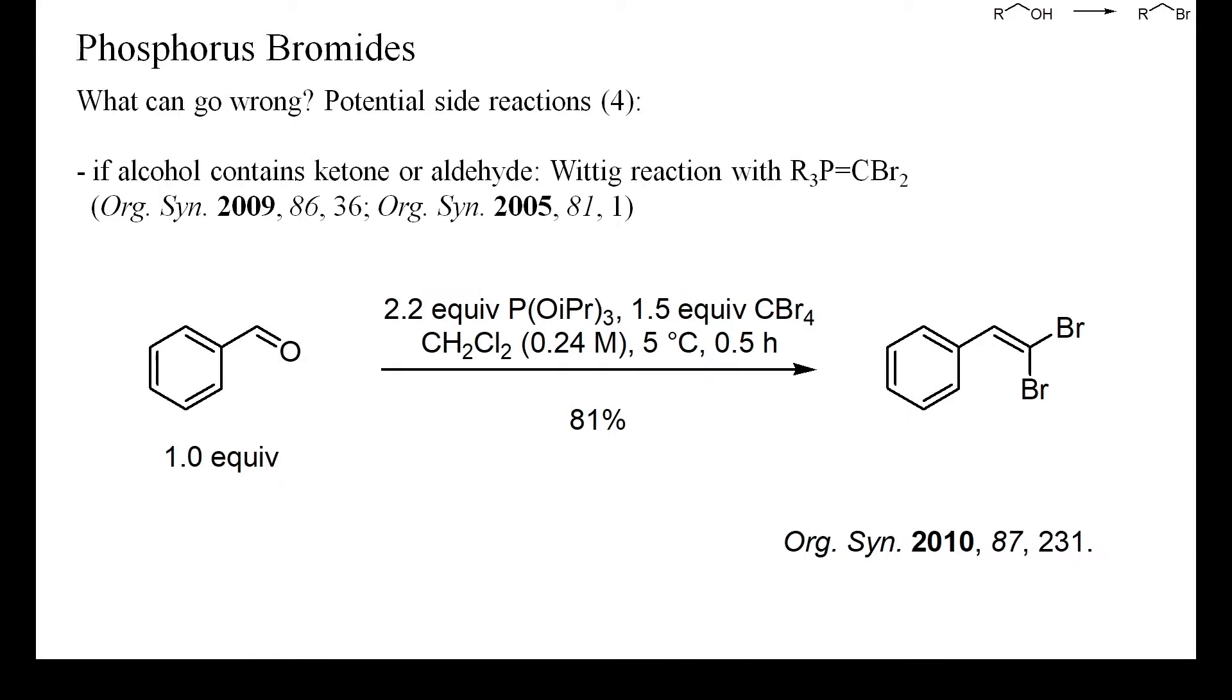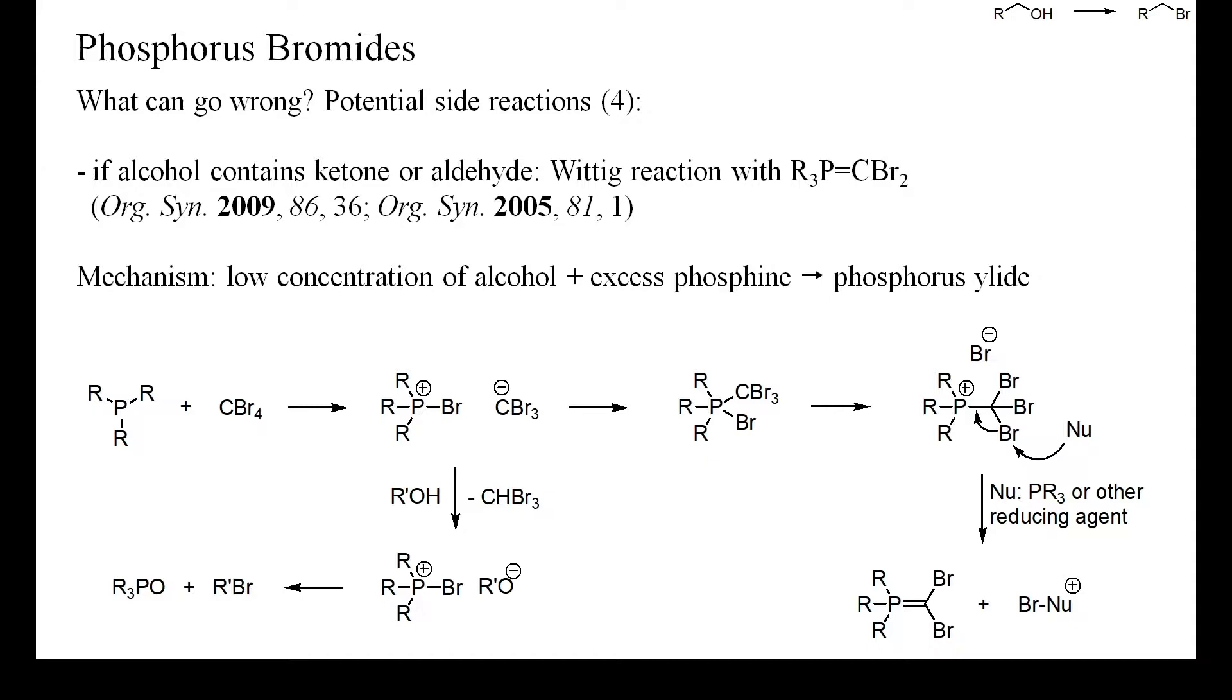If one's starting alcohol is also an aldehyde or a ketone, it may not be a good idea to use carbon tetrabromide as electrophilic brominating reagent, because one further potential side reaction is the olefination of aldehydes or ketones. As shown by this example, such dibromomethylinations can occur under surprisingly mild reaction conditions.